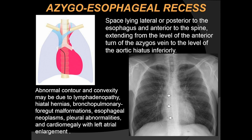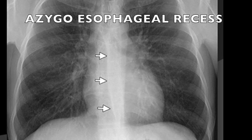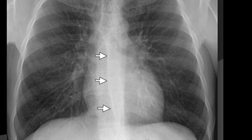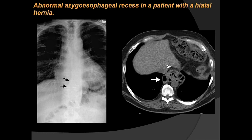The azygosesophageal recess is the space lying lateral or posterior to the esophagus and anterior to the spine, extending from the level of the anterior turn of the azygos vein to the level of the aortic hiatus inferiorly. Abnormality — either thickening or convexity — may be due to lymphadenopathy, hiatal hernias, bronchopulmonary malformations, or esophageal abnormalities. Here a large hiatal hernia causes an abnormal azygosesophageal recess, very well seen on the x-ray.